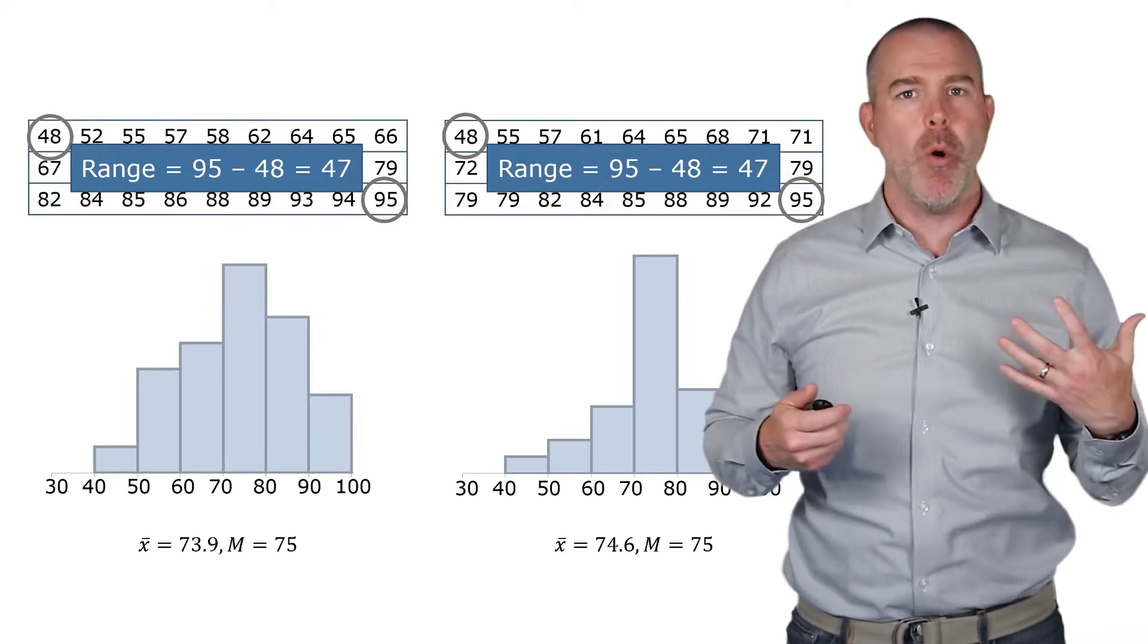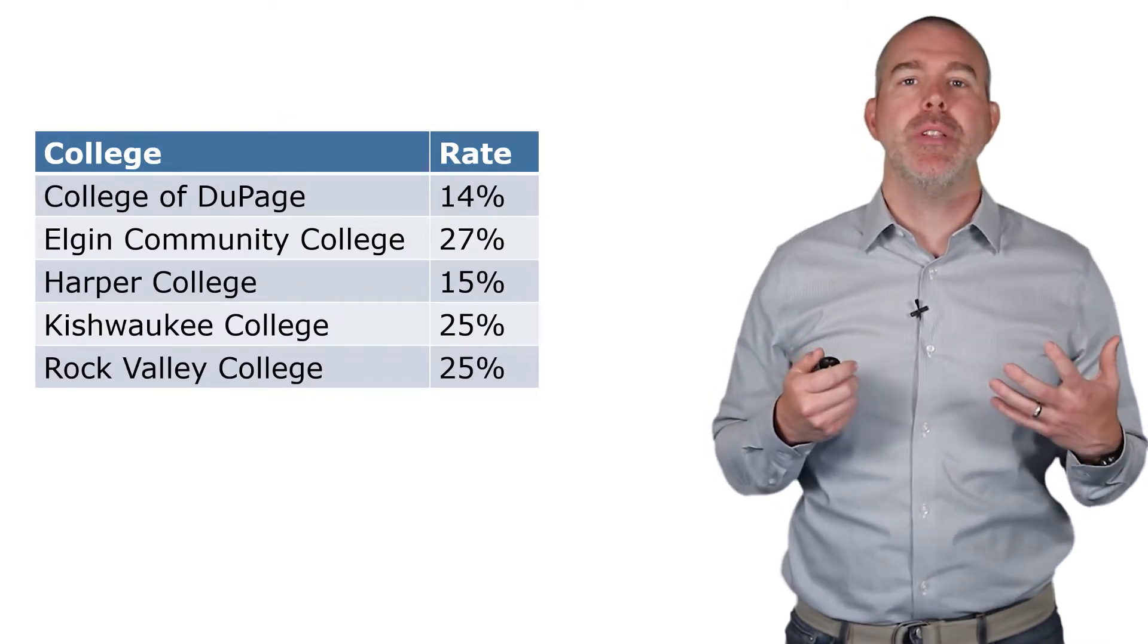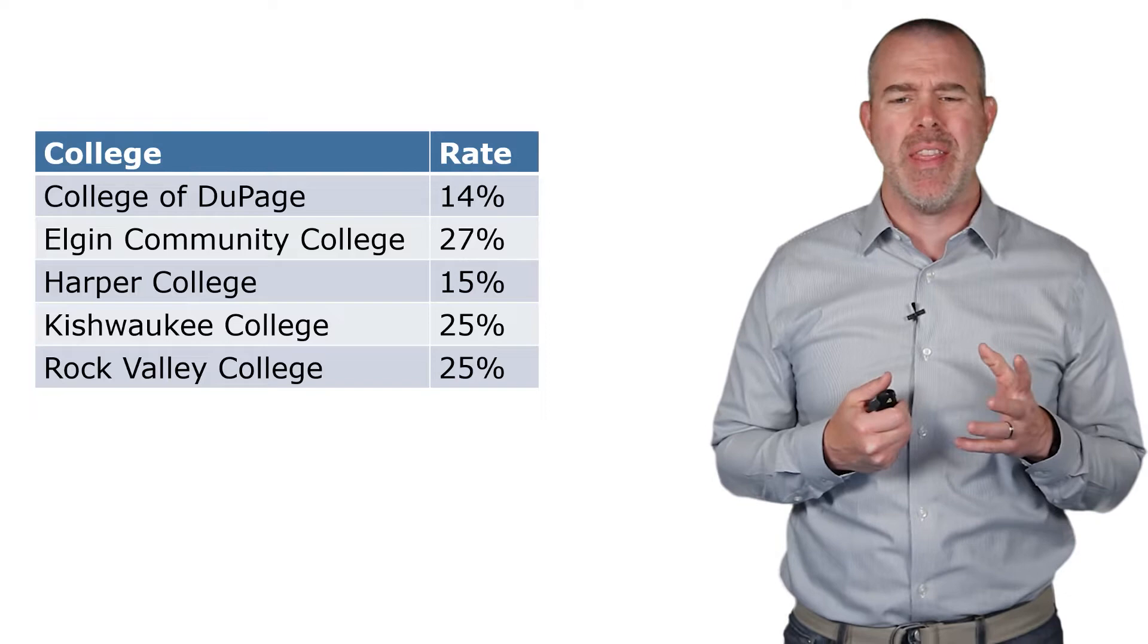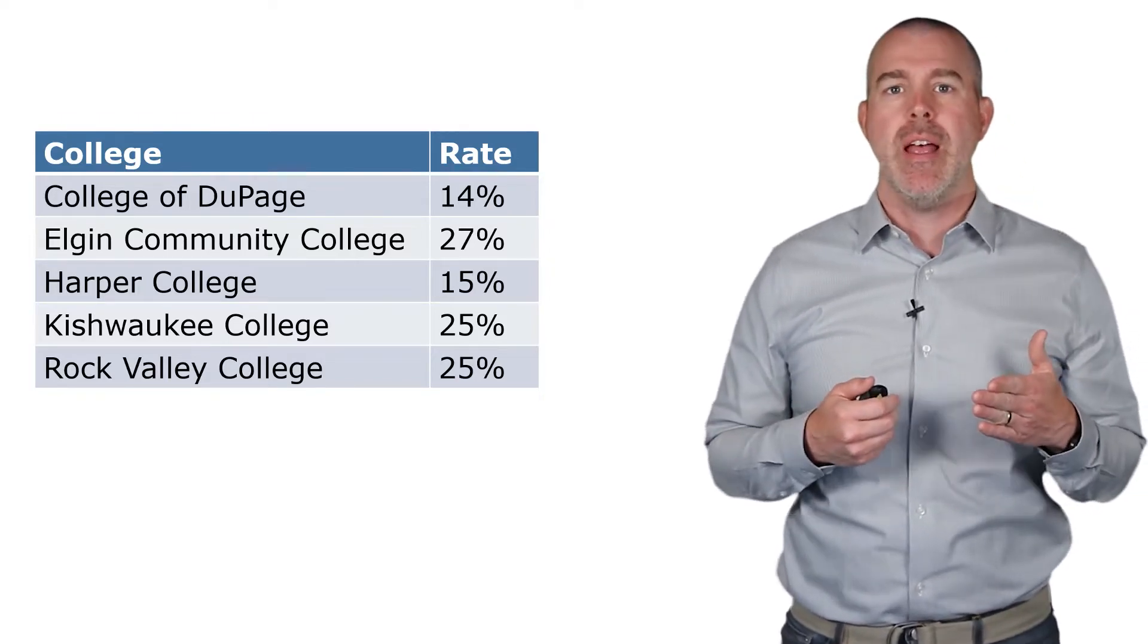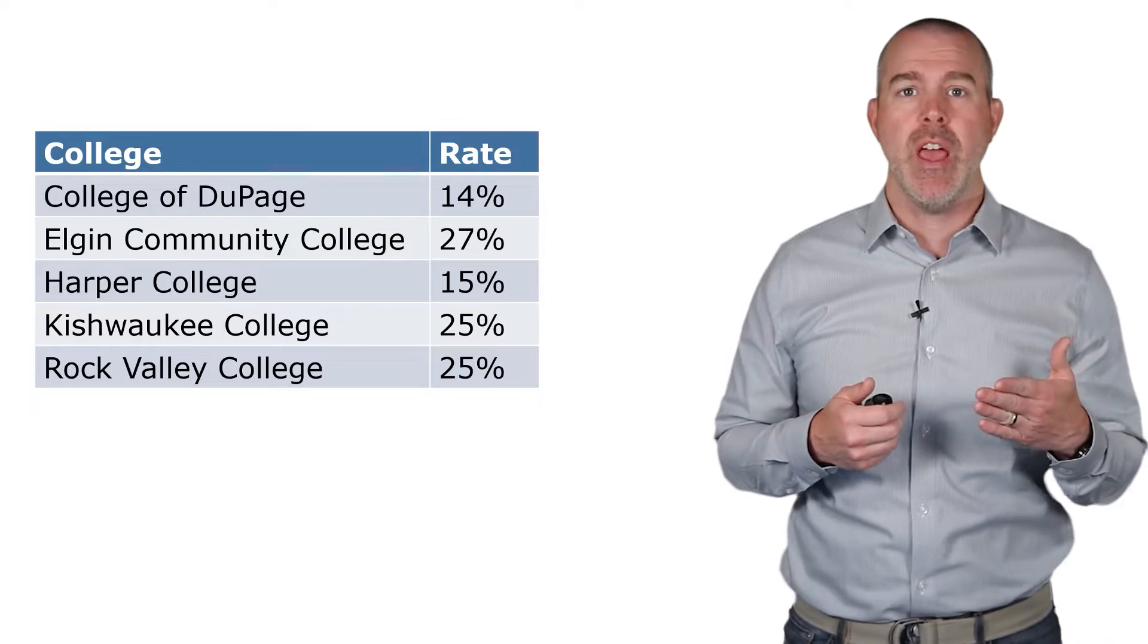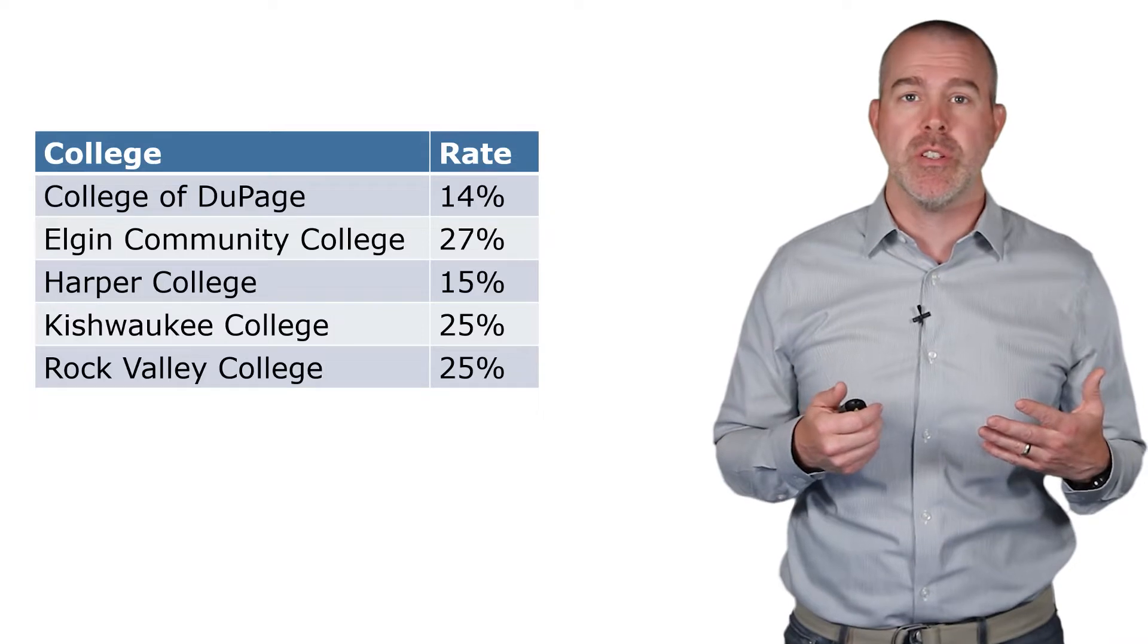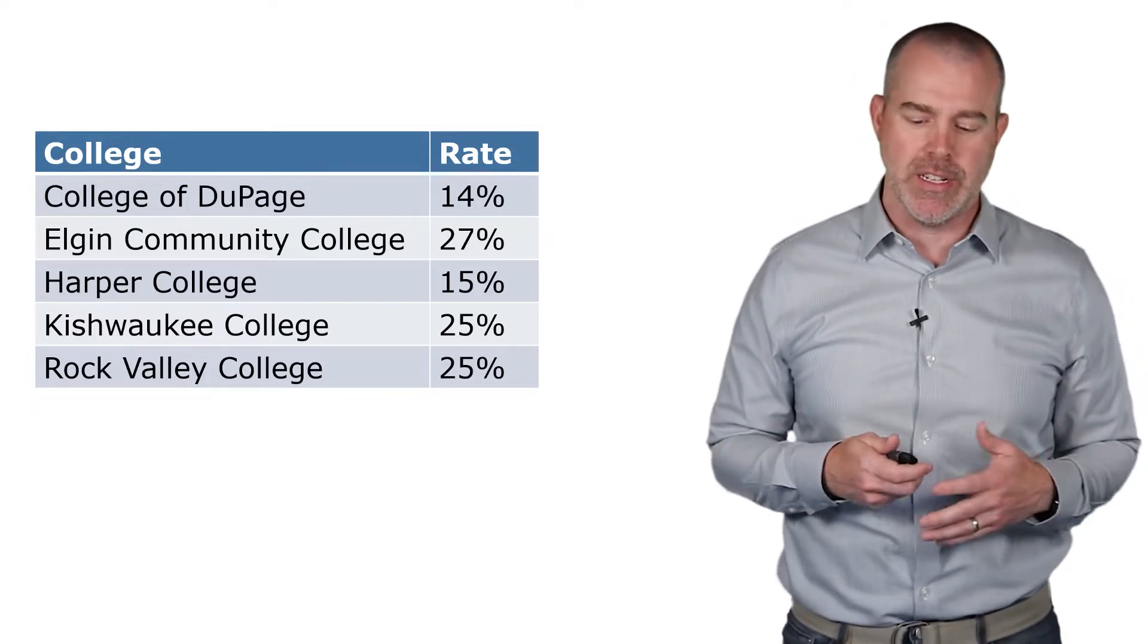We're going to start with some completion data from community colleges. This is a little outdated. I think it's four or five years old. This is the percent of incoming students that complete their certificate within 150% of the allotted time. So if they're getting an associate's degree, do they complete within three years? And here's some local community colleges.